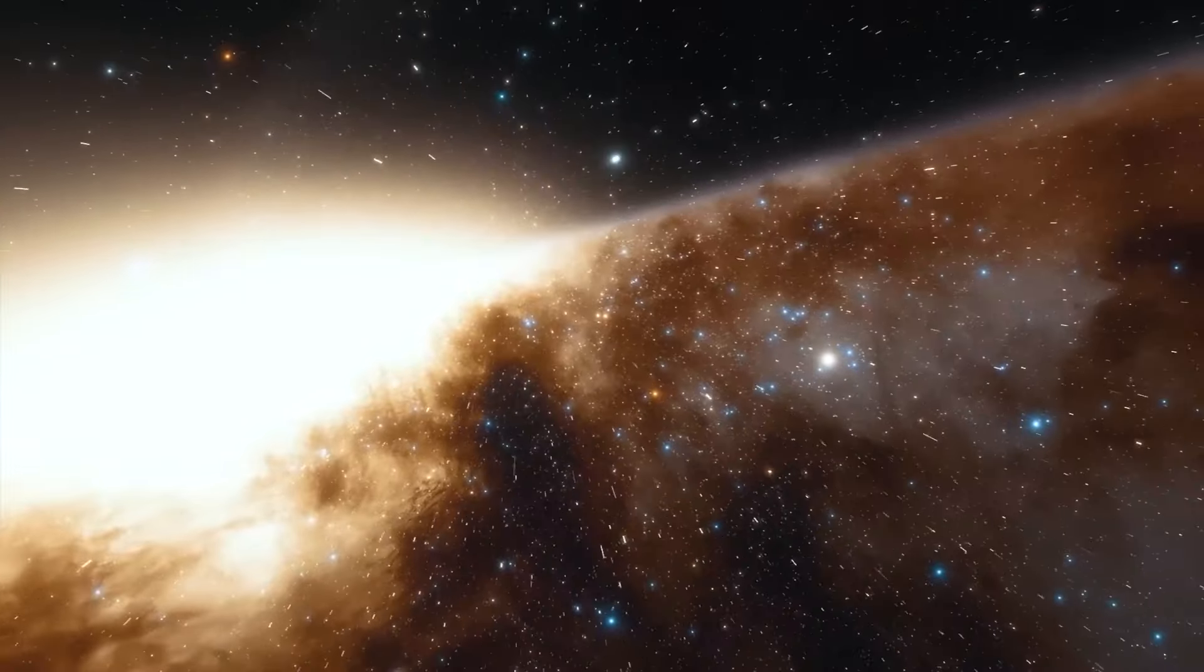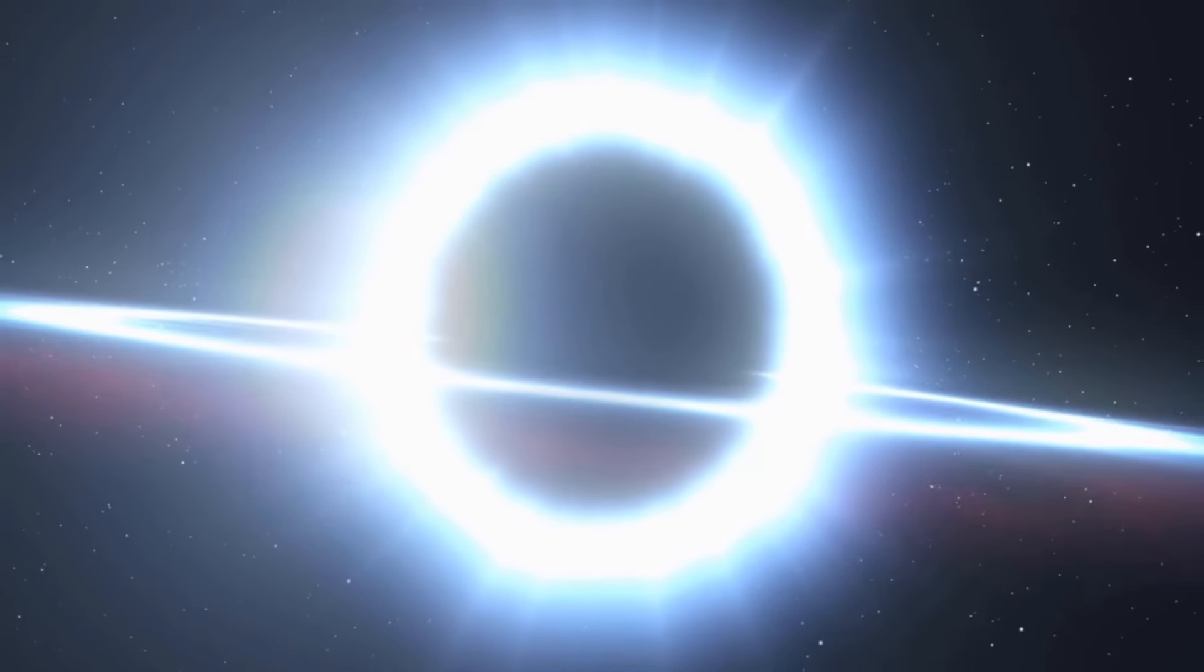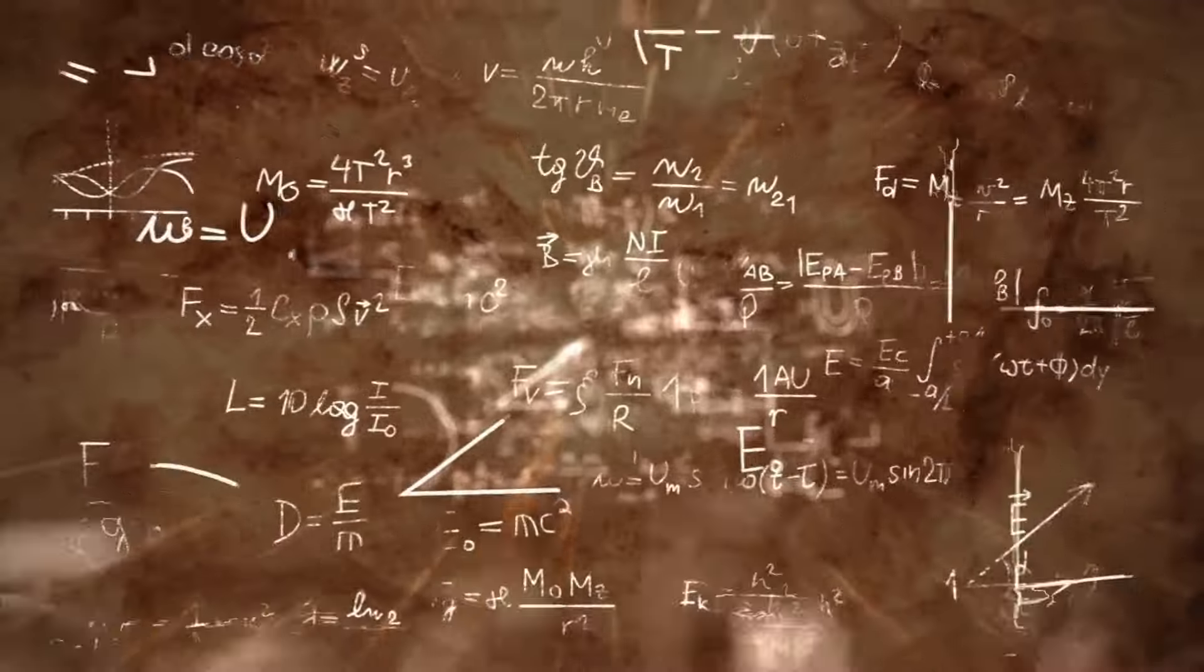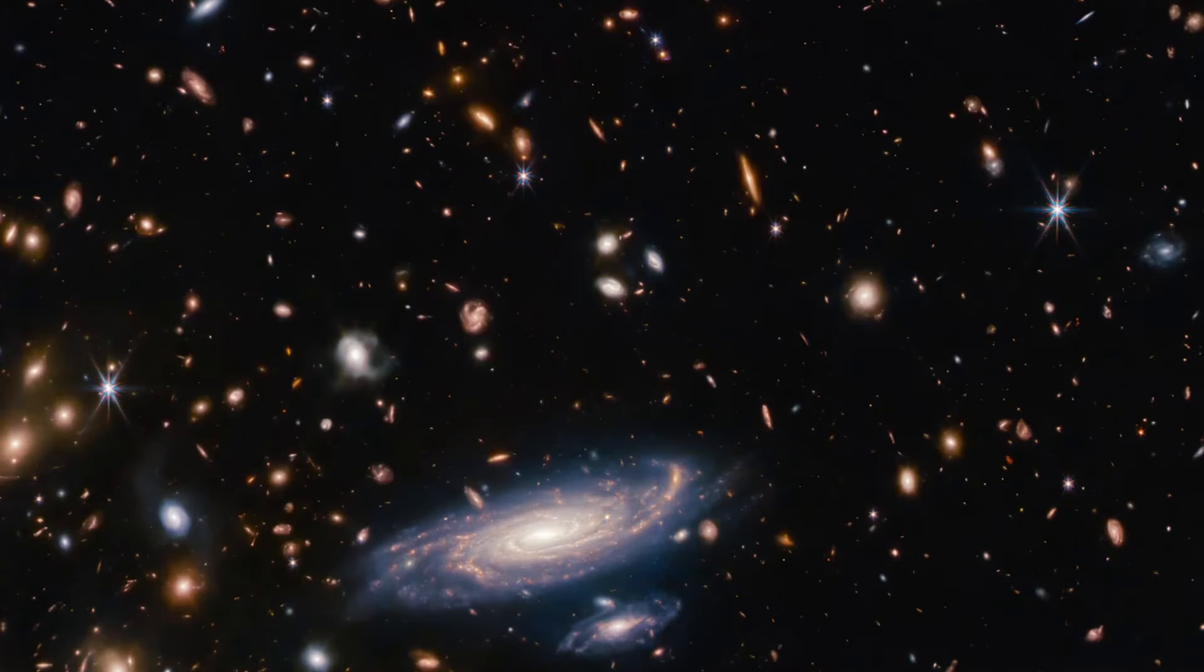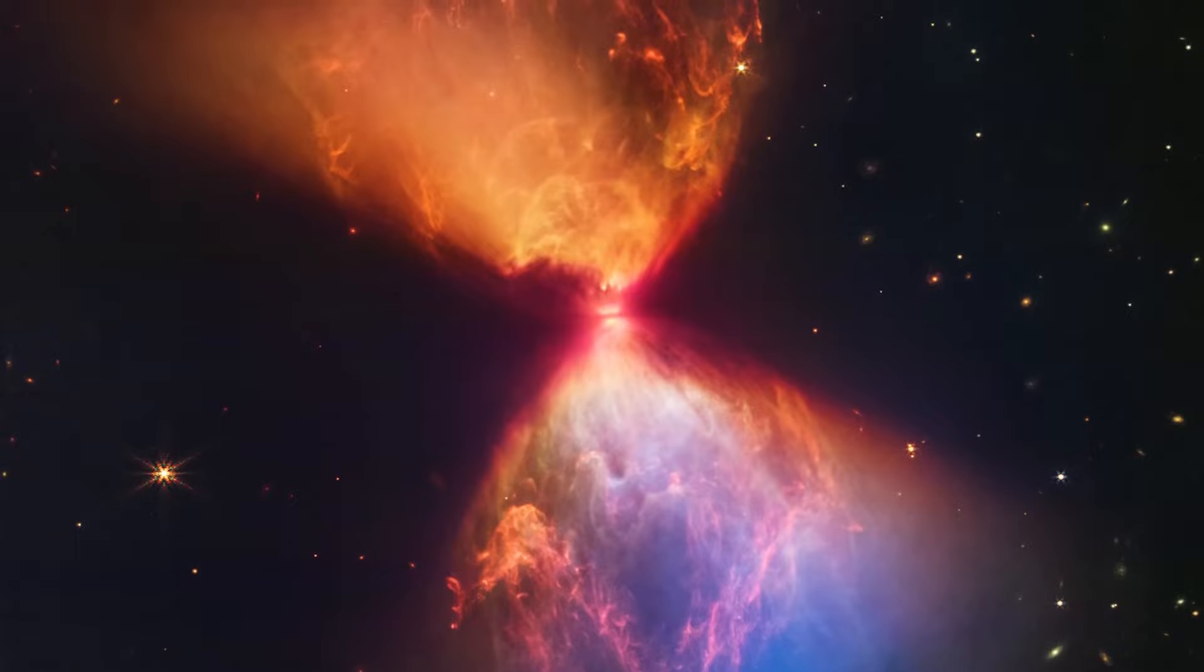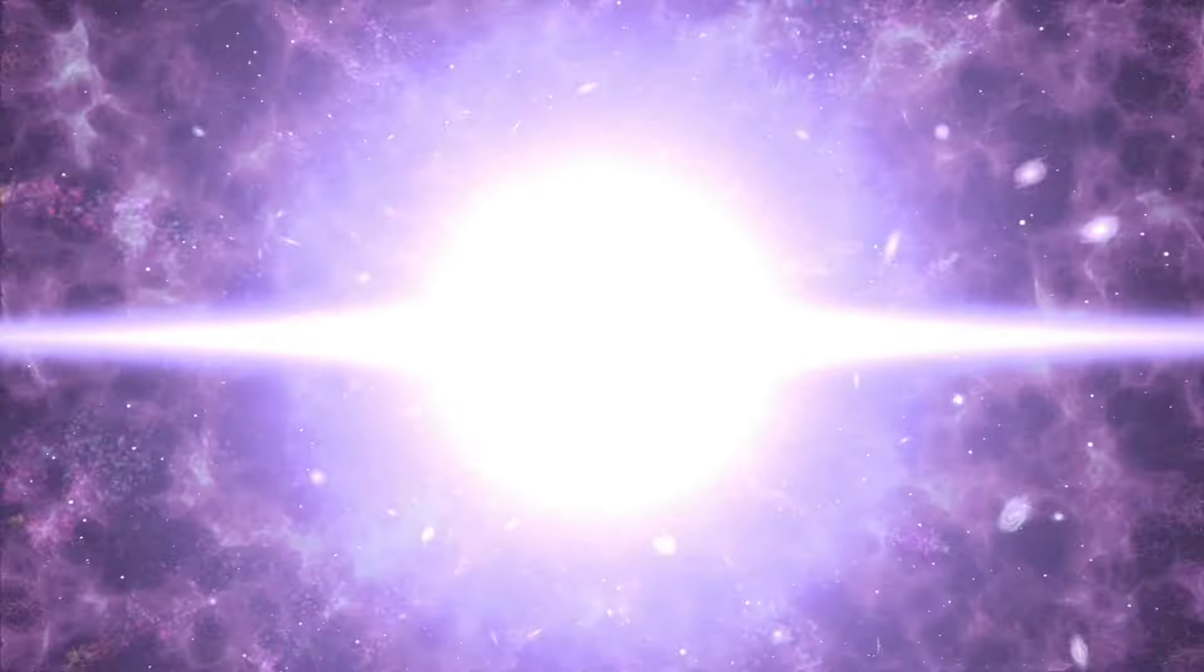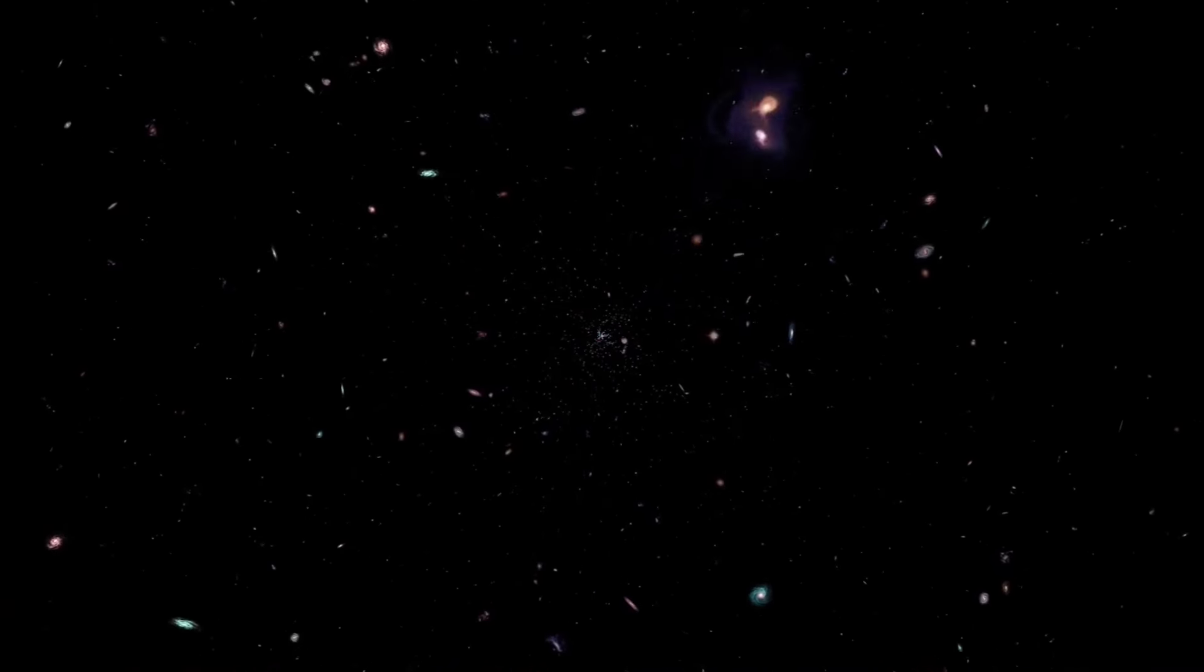Moreover, the smoothness of these galaxies is totally unexpected. According to the Big Bang Theory, galaxies should show irregularities and variations in their structures due to the dynamics of their formation and evolution. However, the images reveal unusually smooth galaxies without the level of complexity and roughness that one would normally expect to see in galaxies of their age. This defies the expected time sequence for the formation and evolution of galaxies within the framework of the Big Bang Theory.